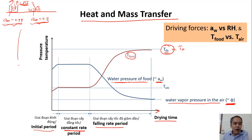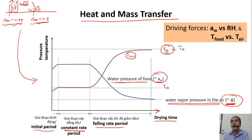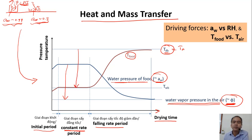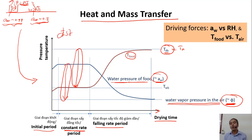For drying to occur, the relative humidity of the air must be smaller than the water activity of the food. If water activity is higher than the relative humidity of the air, water will not evaporate — water transfers from the food to the air, and heat transfers from the air to the food. When these two differences are large, we have fast drying. When the difference becomes smaller, drying slows down.